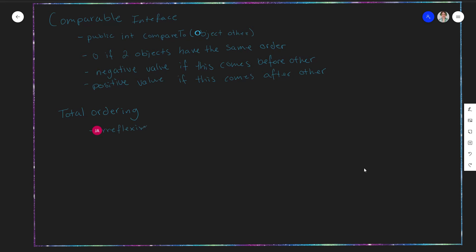Irreflexive sounds big and fancy, but it's not — don't worry. Irreflexive just means that for all objects of the same type, comparing object A to A always returns zero. So if you compare an object to itself, you will always get that they are supposed to be at the same order. This is really important for consistency. That is the irreflexive portion of total ordering.